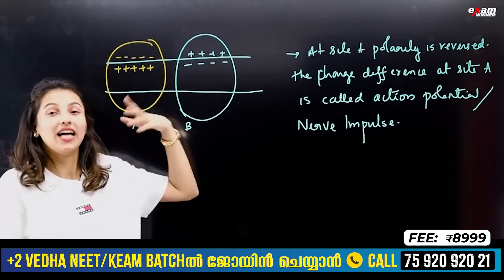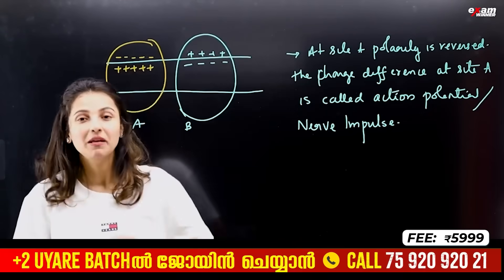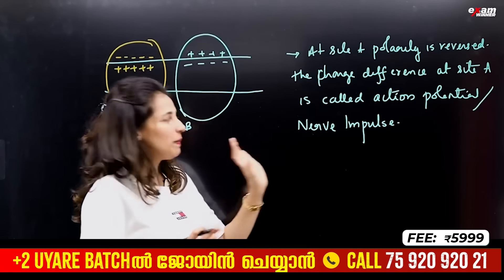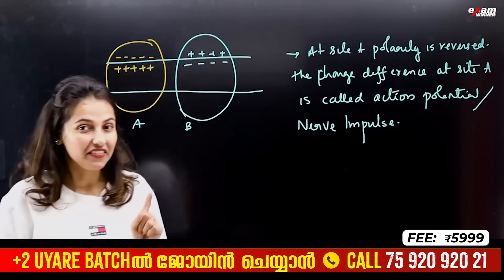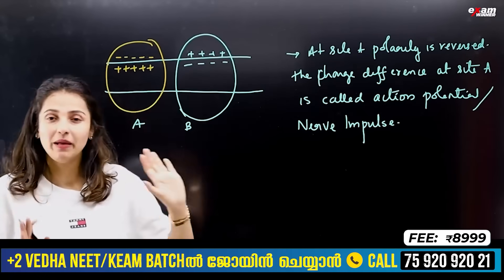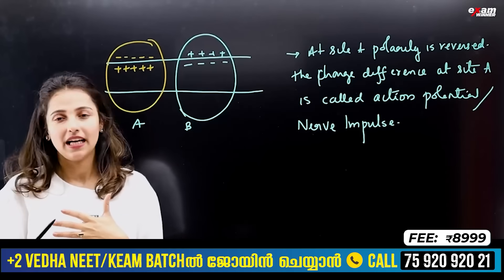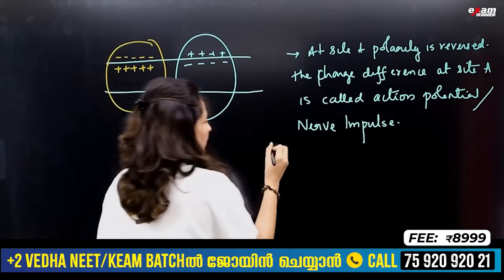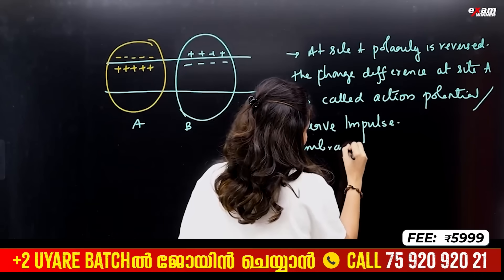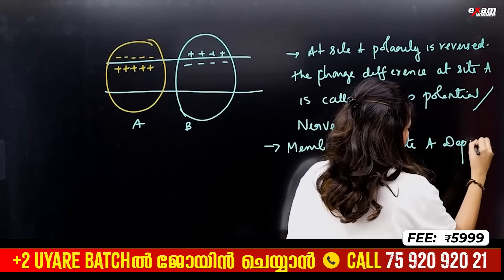At site A, the polarity is reversed. This charge difference is called action potential, also called nerve impulse. At this point, the nerve impulse and action potential are generated. Site A is now depolarized.